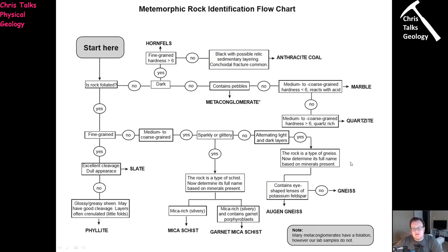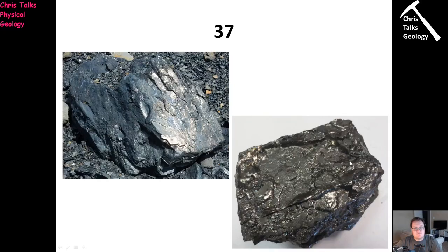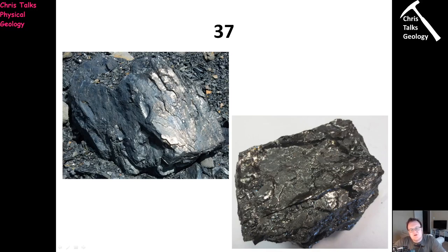The first sample in the box is number 37. We can see it's very dark in colour and has a naturally shiny appearance. Is this rock foliated or non-foliated? You can see if you look at the surfaces there is a layering to it. This is a tricky situation — we're trying to work out whether the layering we see is a foliation, or a remnant of the protolith, something carried through from the original rock.